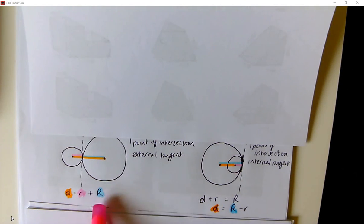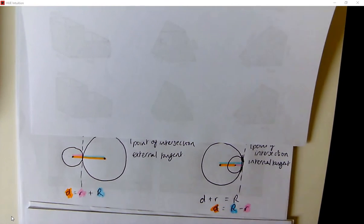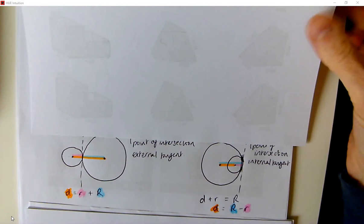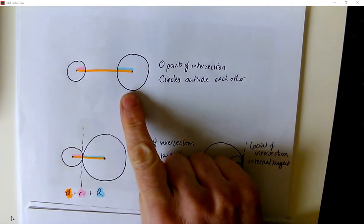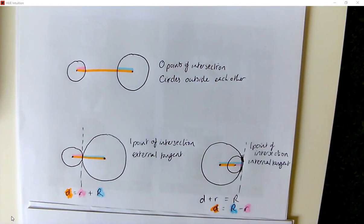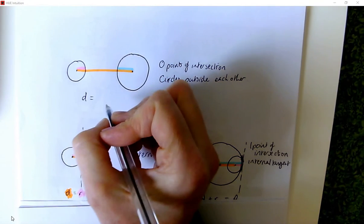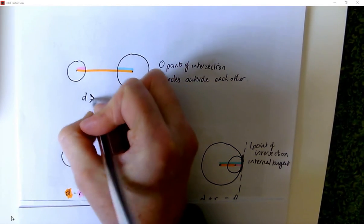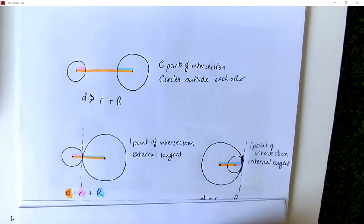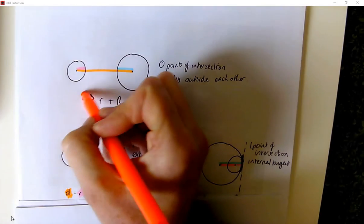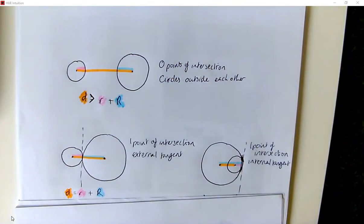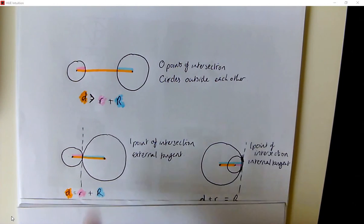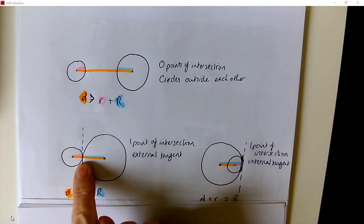So we've got the sum of the two radii and we've got the difference between the two radii. Now let's look at when the two circles are further apart so there will be no points of intersection — the circles are outside each other. You can see that the distance between the centres of the circles is greater than the sum of the two radii. The situation we just looked at, when they were touching, gave one point of intersection.